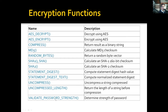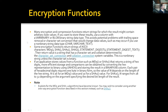Encryption functions return strings where the result might contain arbitrary byte values or special characters. If you want to store encrypted or compressed values, you should use a blob or binary data type. This avoids problems with trailing space removal or character set conversion that could change data values, such as may occur if you use a non-binary string data type like CHAR, VARCHAR, or TEXT.